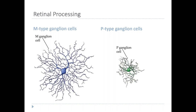The cells that actually communicate with the brain from the retina are called the retinal ganglion cells. They get their input from the bipolar cells, which in turn get their input from the photoreceptors. There are two main types of retinal ganglion cells: the M-type and the P-type.